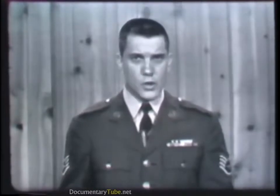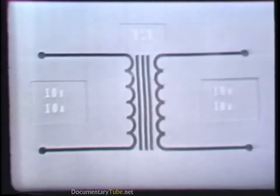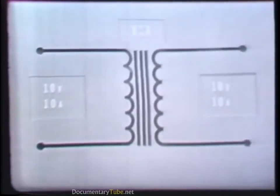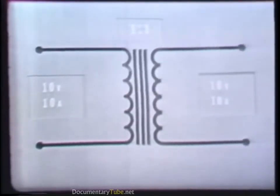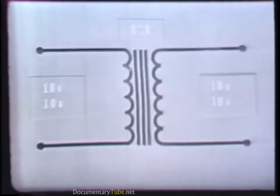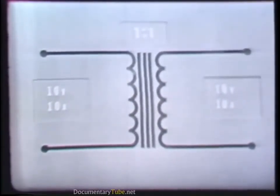Thus far, you've seen that if the secondary of a transformer has more turns than the primary, the voltage is stepped up, whereas if the secondary has fewer turns, the voltage is stepped down. Later you'll see transformers in which the primary and secondary have the same number of turns. Such a transformer has a turns ratio of 1 to 1. Unlike the step-up and step-down transformer, a 1-to-1 transformer neither increases nor decreases voltage. The voltage and current available at its secondary is the same value as that applied to its primary.